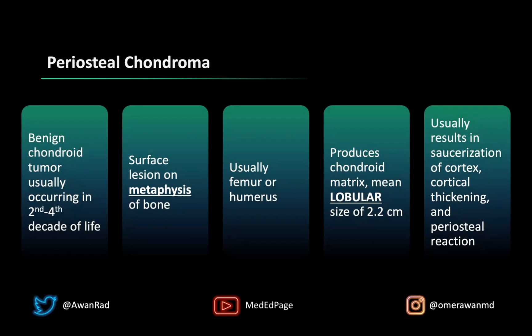An important consideration is that periosteal chondromas produce chondroid matrix — usually rings and arcs of cartilage matrix — and they're lobular, well-defined, ovoid in shape, and often small. The mean size is typically 2.2 centimeters; this case was about 2.5 to 2.8 centimeters. They usually result in saucerization of the cortex, causing an undulating contour. Sometimes you can get cortical thickening or periosteal reaction, but saucerization is most common in my experience.